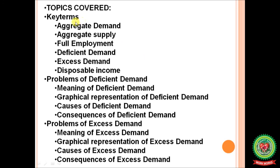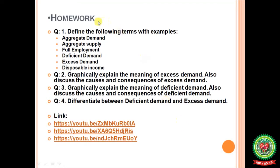So students, today you have covered the key terms: aggregate demand, aggregate supply, full employment, deficient demand, excess demand, and disposable income. You also covered the problems of deficient demand — its meaning, graphical representation, causes and consequences — and the problems of excess demand — its meaning, graphical representation, causes and consequences. Homework: Question 1 — define the following terms with examples: aggregate demand, aggregate supply, full employment, deficient demand, excess demand, and disposable income. Question 2 — graphically explain the meaning of excess demand and discuss its causes and consequences. Question 3 — graphically explain the meaning of deficient demand and discuss its causes and consequences. Question 4 — differentiate between deficient demand and excess demand. Please go through the links for more clarity. Thank you for listening.